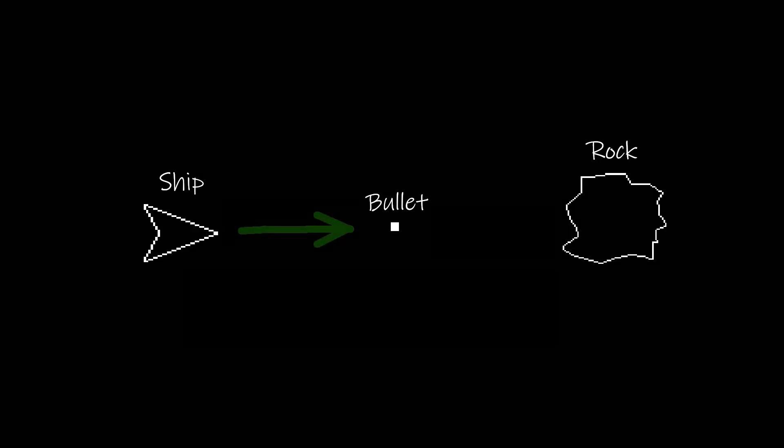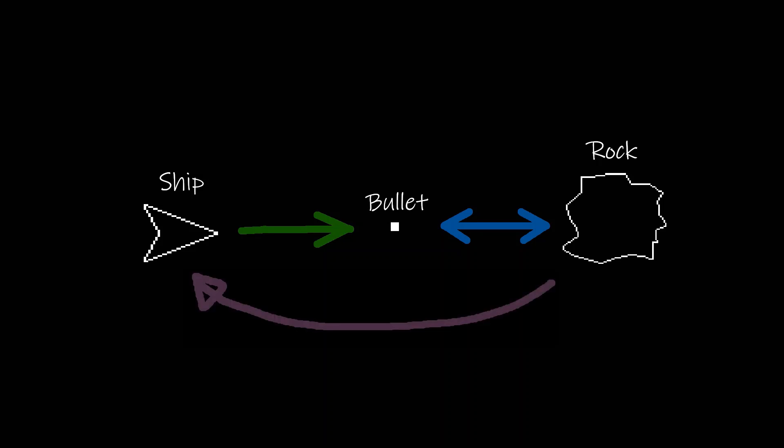So let's have a think about what we've already programmed into the game. At the moment we have a player ship, asteroids and bullets. The player ship can create bullets which travel at a fixed speed and direction, and those bullets can collide with asteroids and destroy them, and also themselves. The ship can also collide with the asteroids which will destroy the ship. So that's how all of our different objects are interacting with each other and colliding.